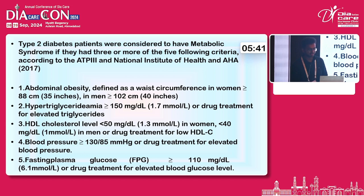First criteria: abdominal obesity, defined as waist circumference in women more than or equal to 88 cm and in men more than or equal to 102 cm.